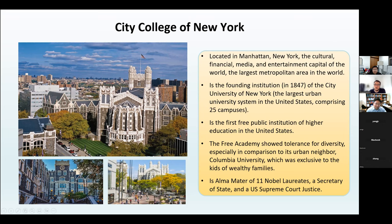We have very exceptional alumni. So far, we have 11 Nobel laureates among our alumni, as well as a Secretary of State and a US Supreme Court Justice, among many others. We also have very beautiful buildings around campus; however, the School of Engineering building — the Grove School of Engineering — is always the most ugly building around campus, as is the case at many other universities.